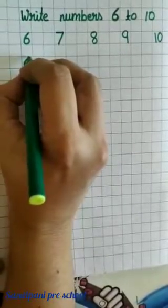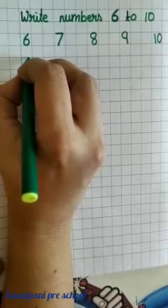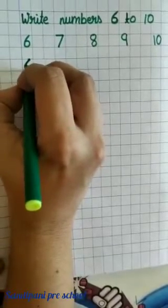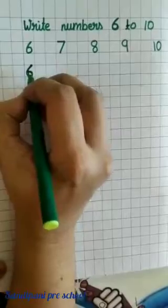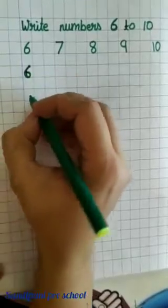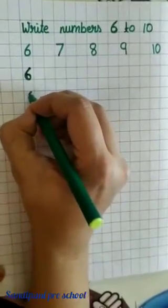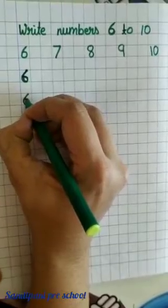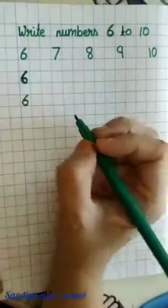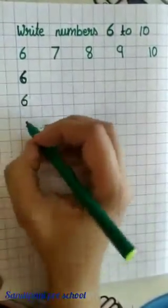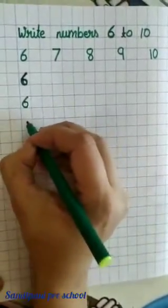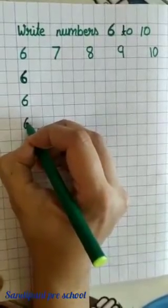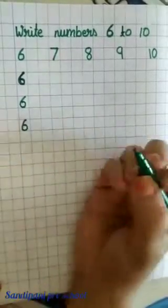How do we write? A curve joining another curve is number 6. Again, a curve joining another curve is number 6. Once more, a curve joining another curve makes number 6.